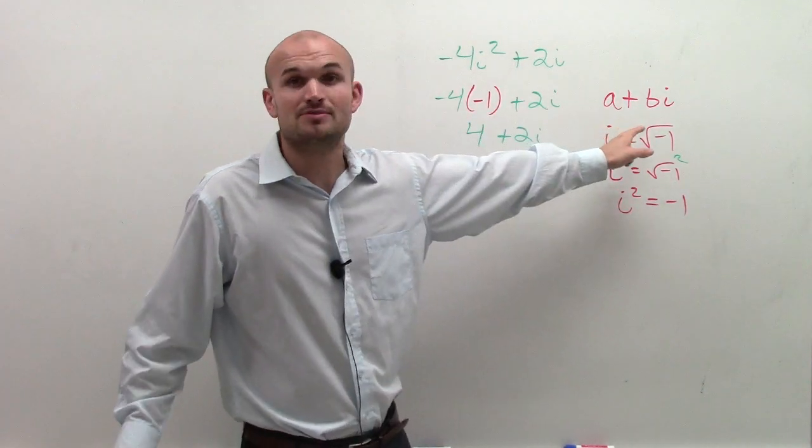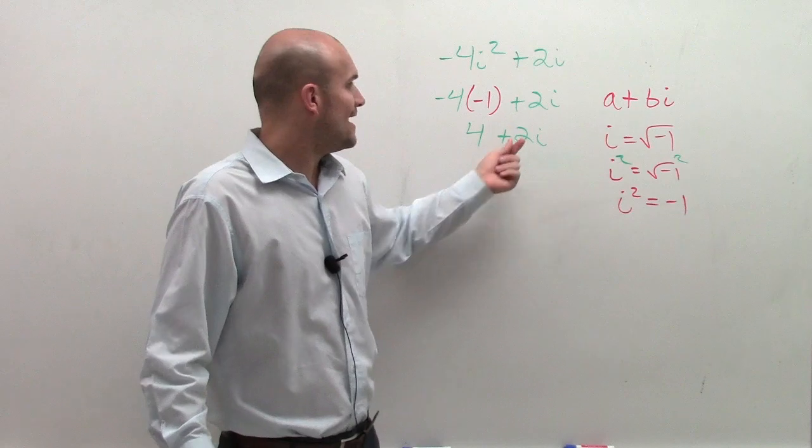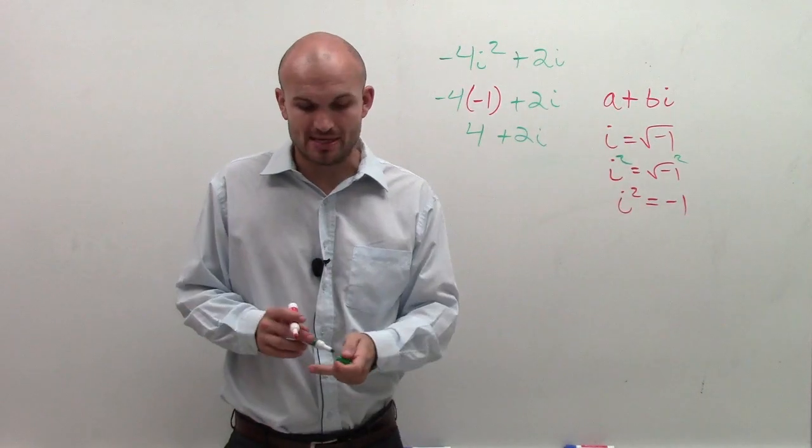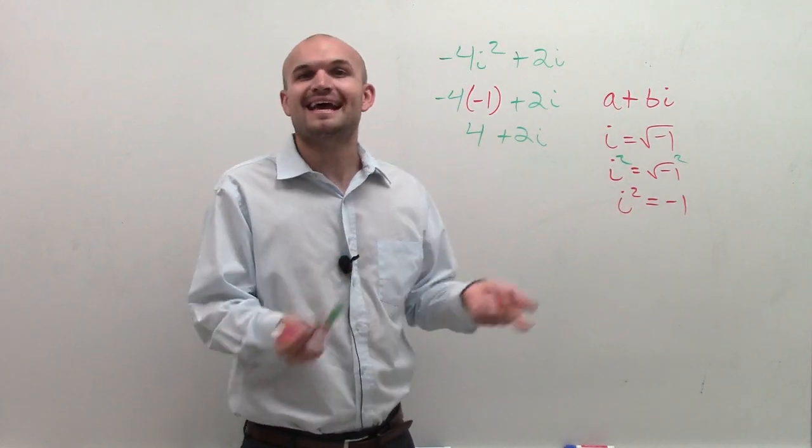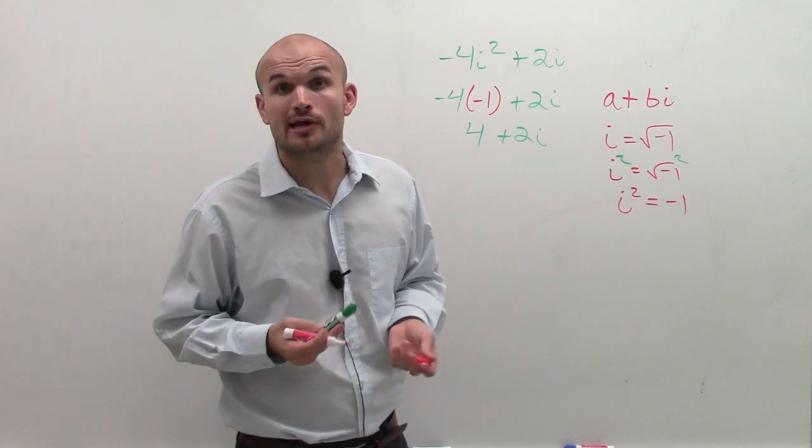Where 4 is my a, which is my real part. And then 2i is equal to bi, which is my imaginary part, a complex number in standard form. Now you know.